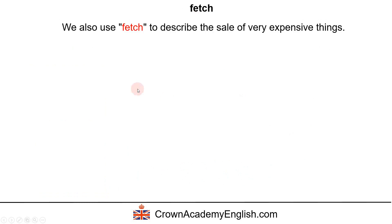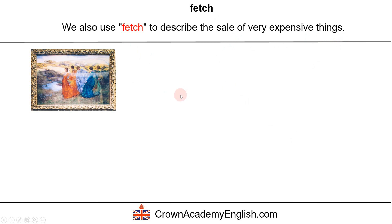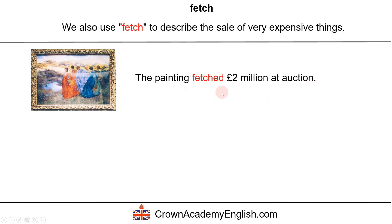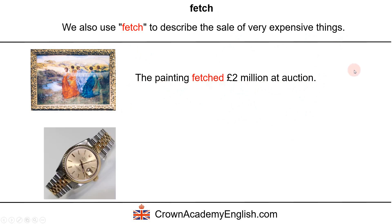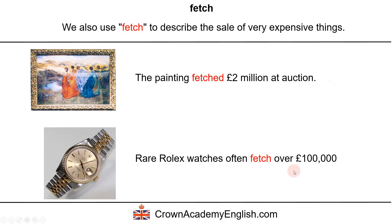Fetch. We also use fetch to describe the sale of very expensive things. The painting fetched 2 million pounds at auction — somebody paid 2 million pounds for this painting. Rare Rolex watches often fetch over 100,000 pounds — here we are using the present simple, talking in general about the regular normal price.